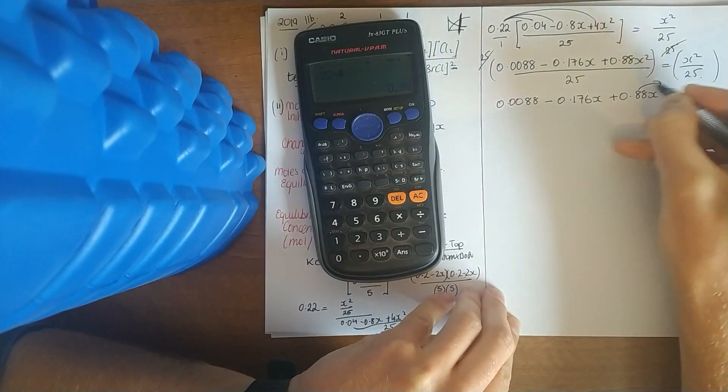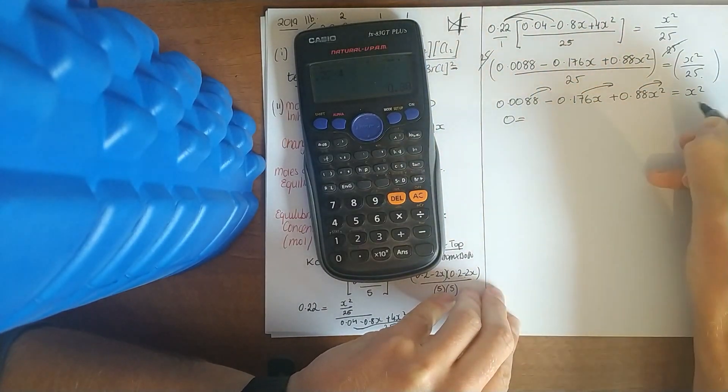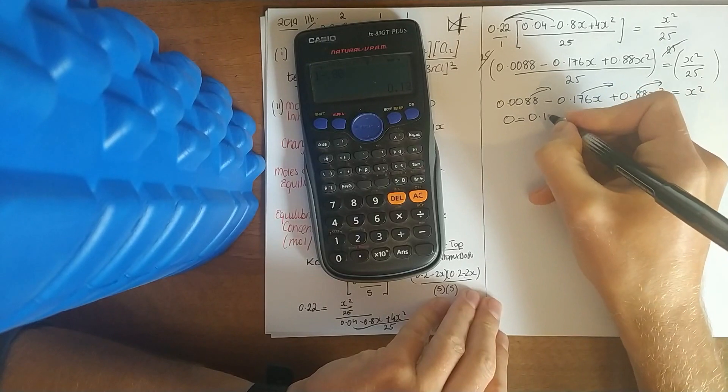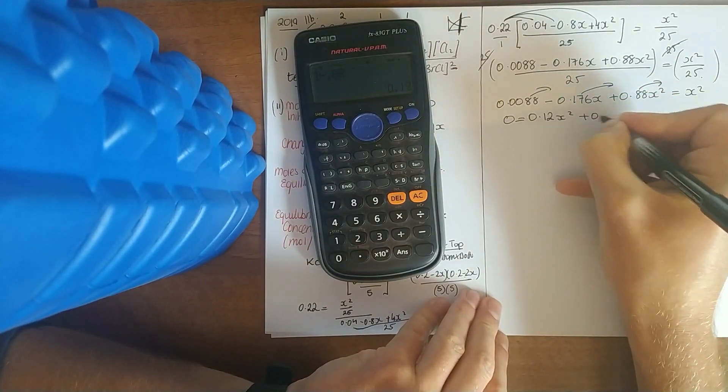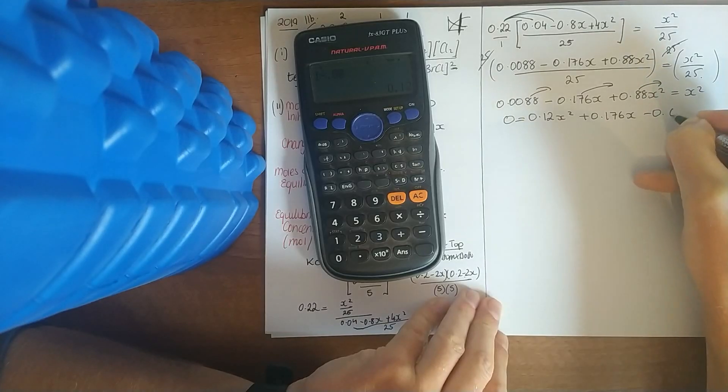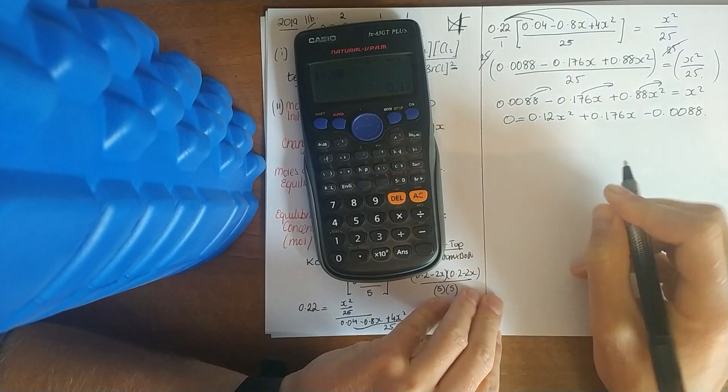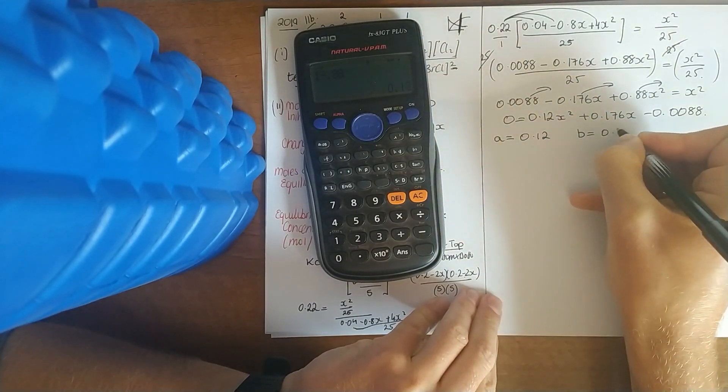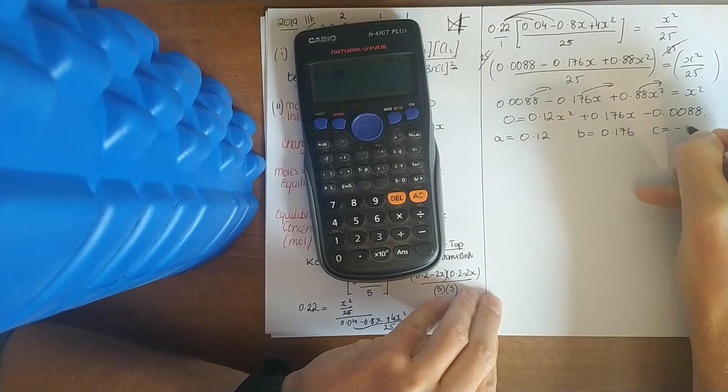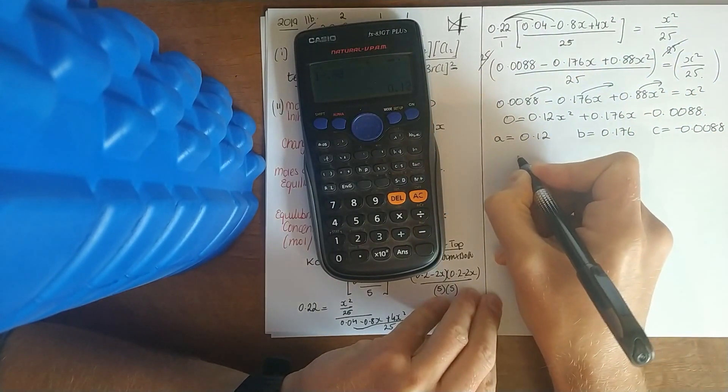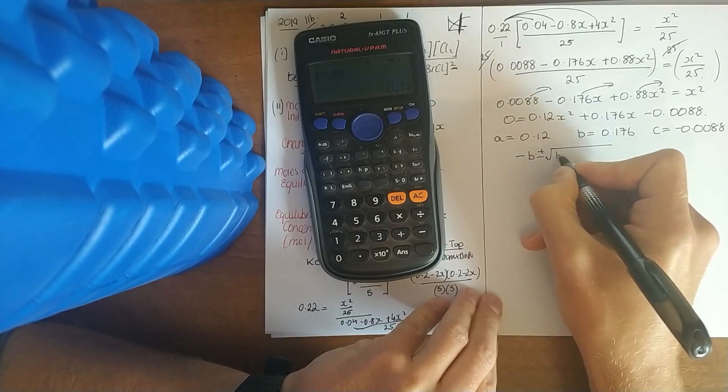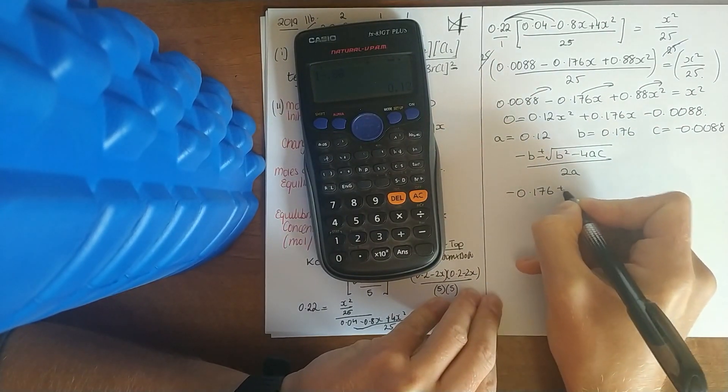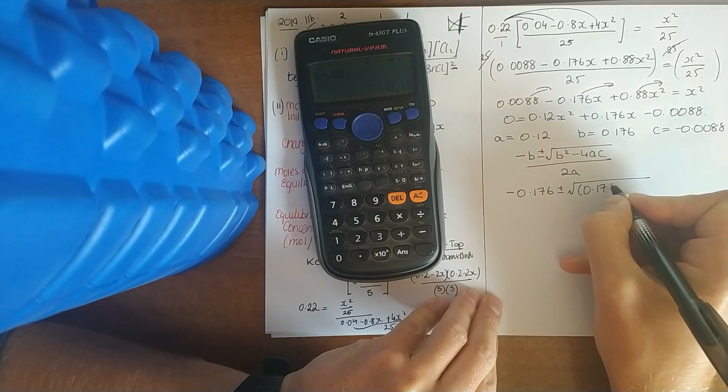Tidy that up, it's looking like a quadratic. Bring everything over to one side. So x squared minus 0.88x plus 0.0088. I wouldn't just try and open up brackets there, you'll be all day. So use your minus b formula. Your value of a is 0.12.